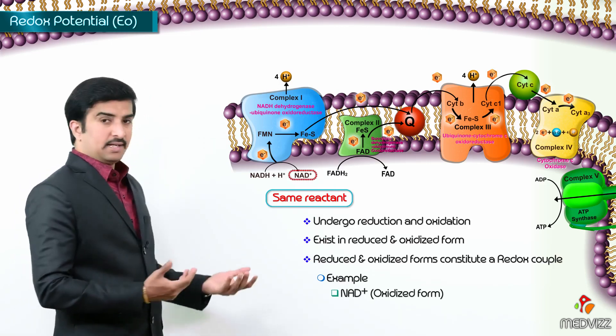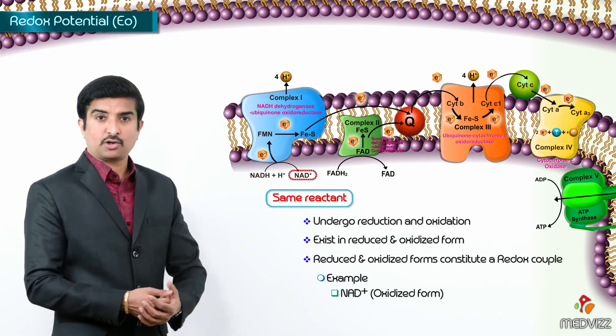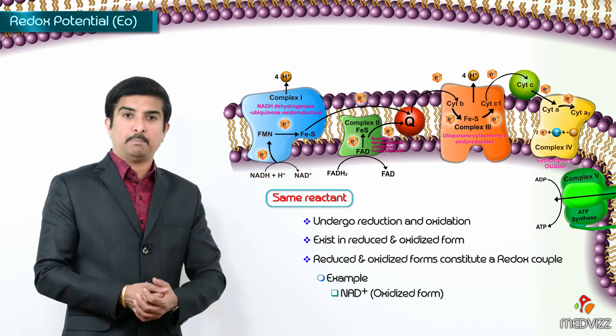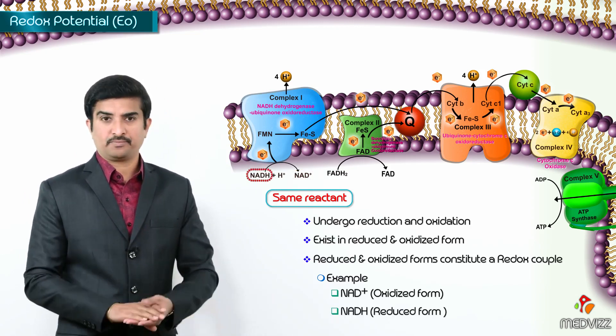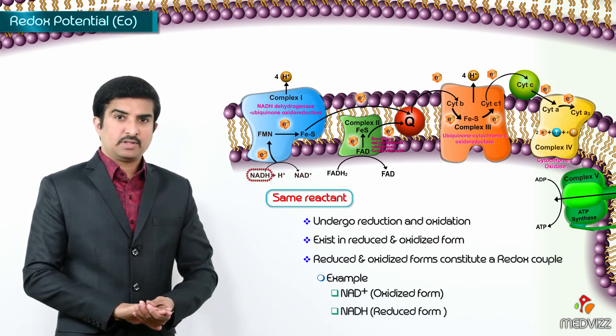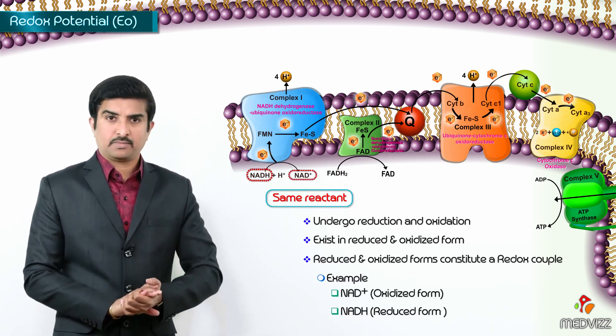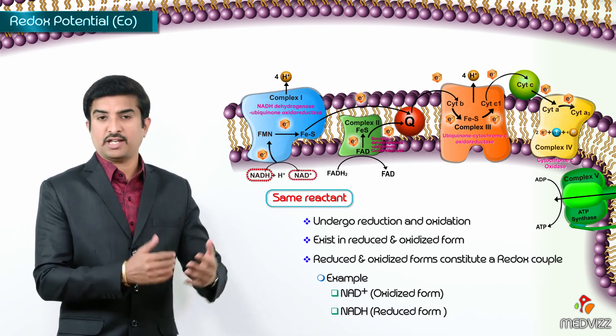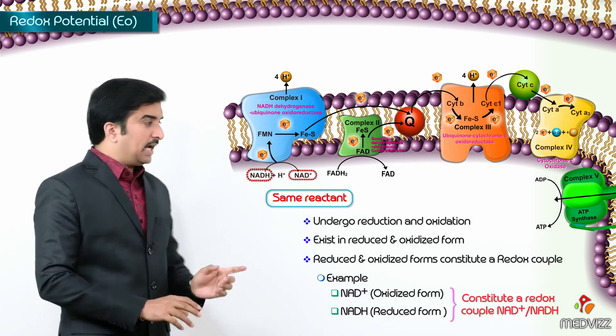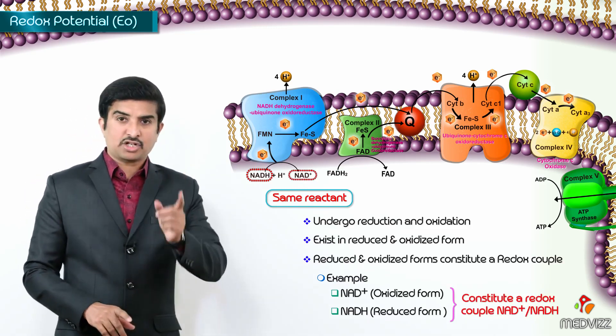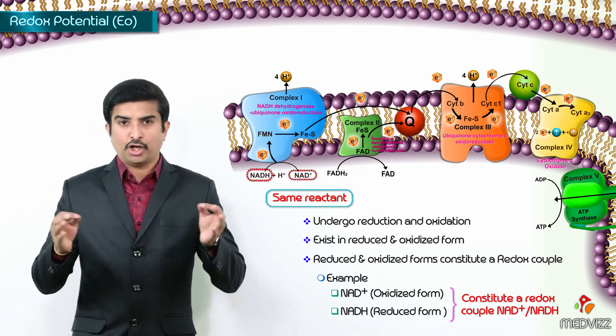So, NAD+ is in the oxidized form and by accepting electrons, the same NAD+ forms NADH, it is called as reduced form. Which means the same reactant which is NAD can exist in oxidized form as well as in the reduced form. So, the NAD+ as well as NADH constitute a couple, this is called as the redox couple.